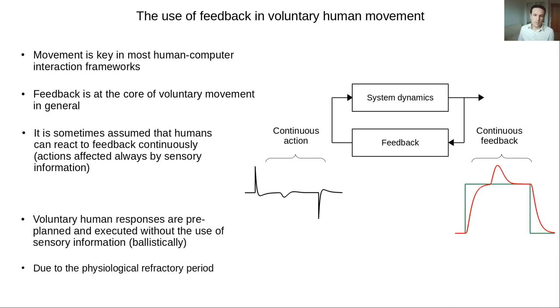However, there are experimental results in motor control of voluntary movements showing that humans cannot react continuously to feedback, and that their responses are pre-planned and executed ballistically, mainly due to physiological constraints such as the refractory period.